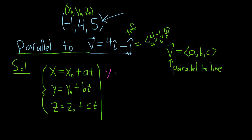So plugging everything in, we have x equals x naught, so negative one, plus a t, so a is four, so plus four t. That's our first parametric equation for our line.